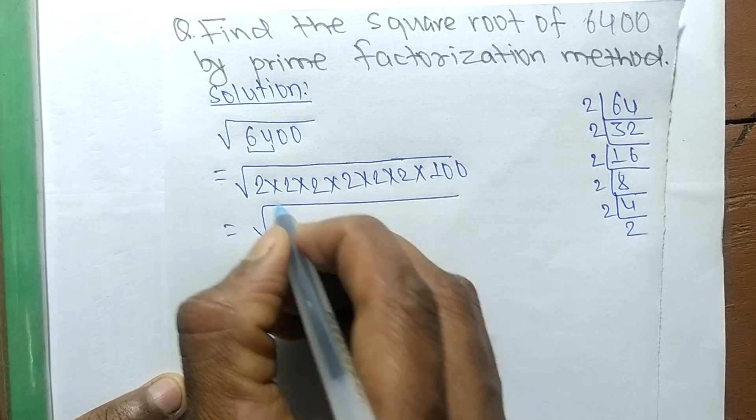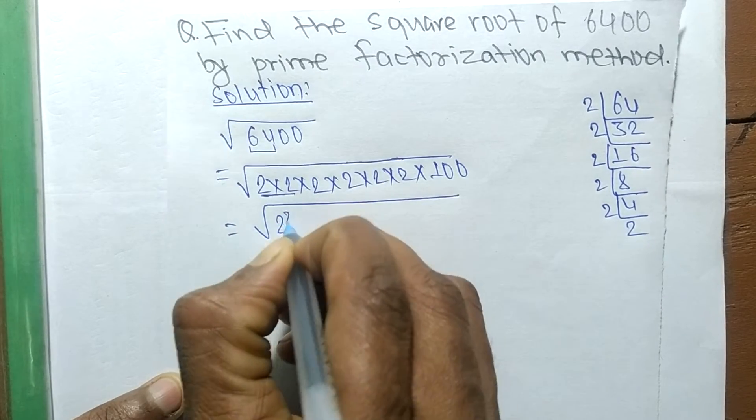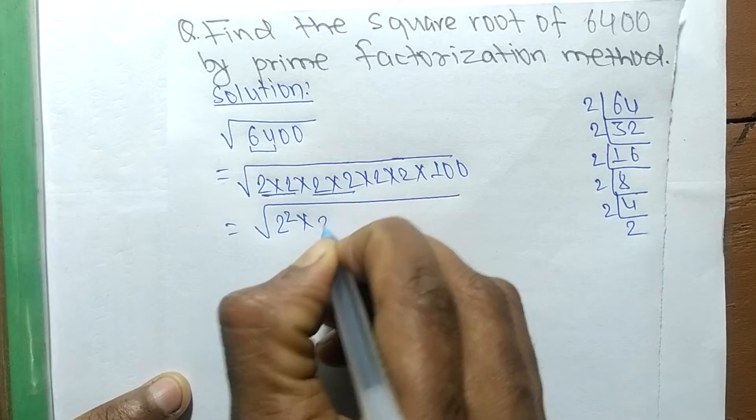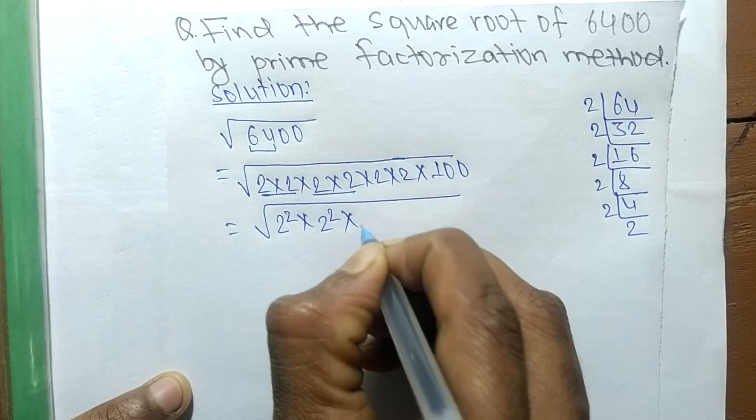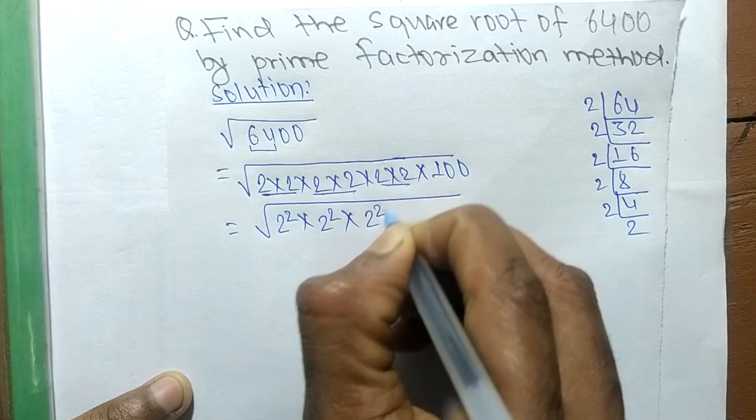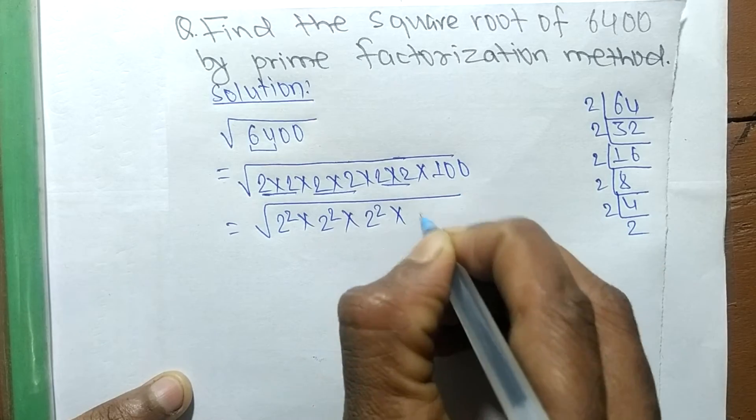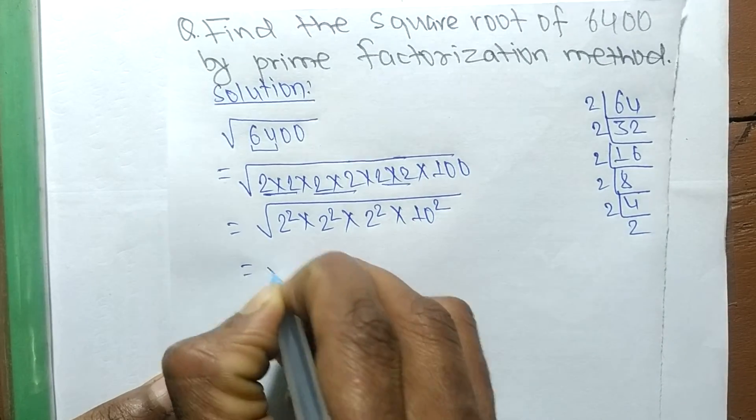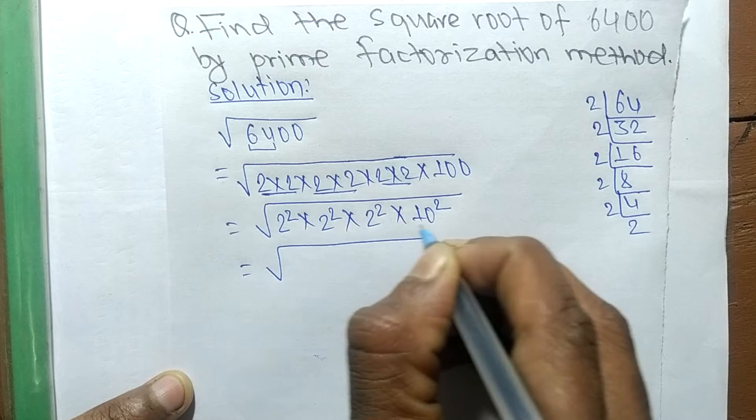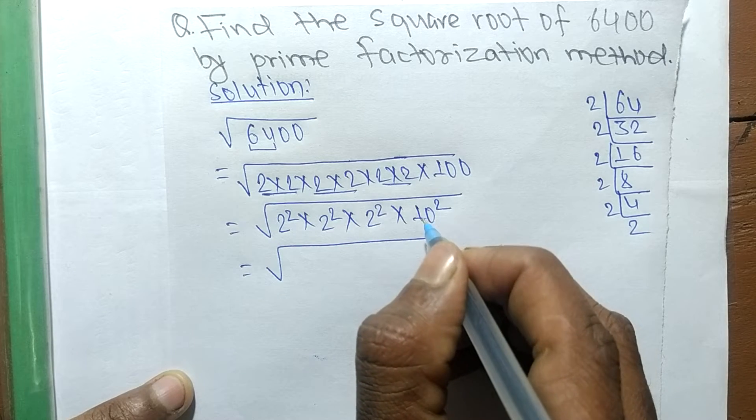So 2 into 2 is 2 square, 2 into 2 is 2 square, 2 into 2 is 2 square. Like this, 100 means it is 10 square. So square is present in all, so we take here a square as a common.